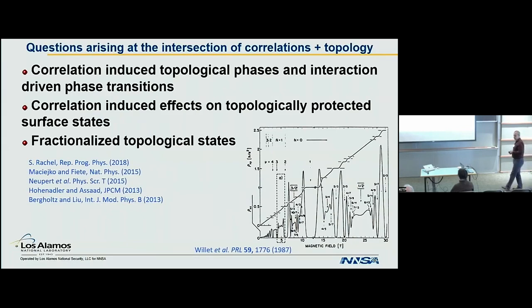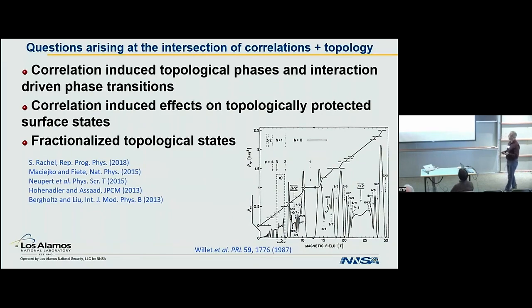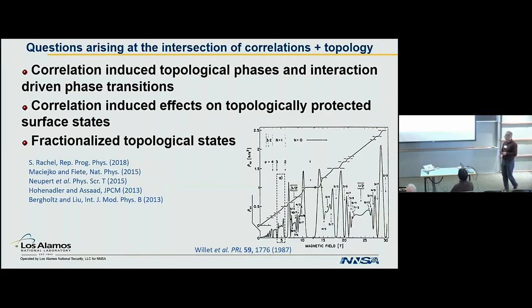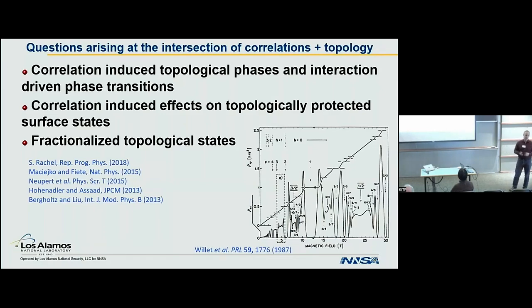The kinds of questions we're asking are: where can we find the interplay between correlations and topology? These are the same kinds of questions we've been hearing throughout the week. Can we identify correlation-induced topological phases and see interaction-driven phase transitions between topological phases? We're also asking whether we can find evidence of correlations on symmetry-protected topological surface states. And one of the Holy Grails would be to identify some kind of fractionalized topological state — the example being the fractional quantum Hall effect — and find the fractionalized version of topological insulators.